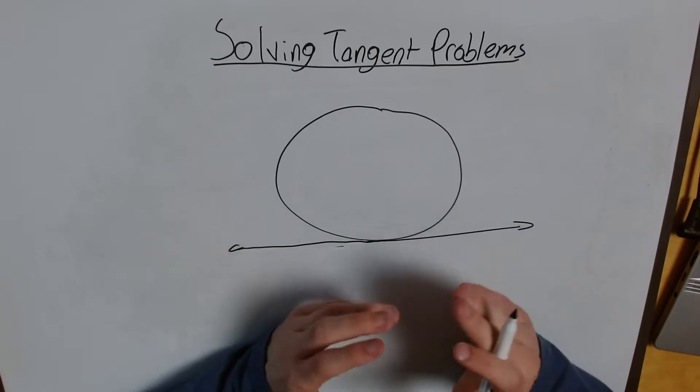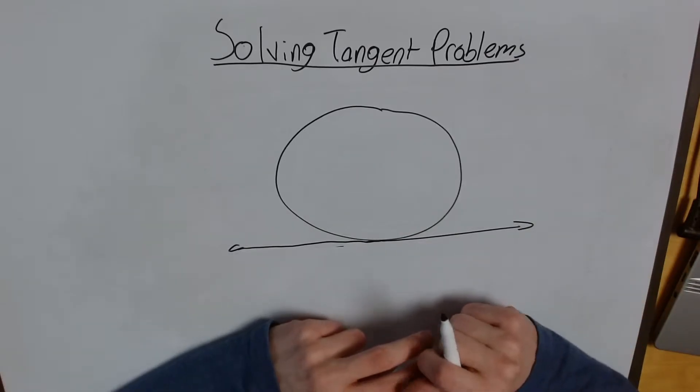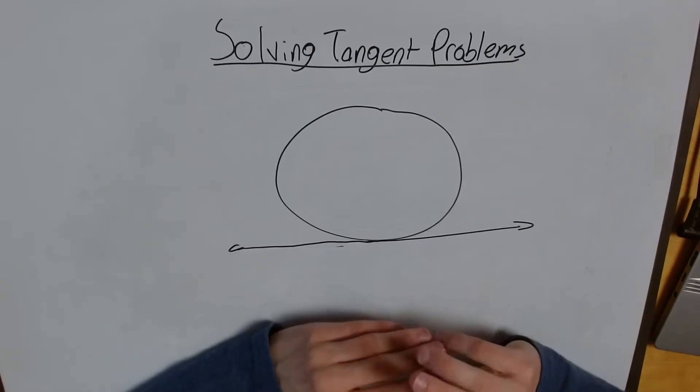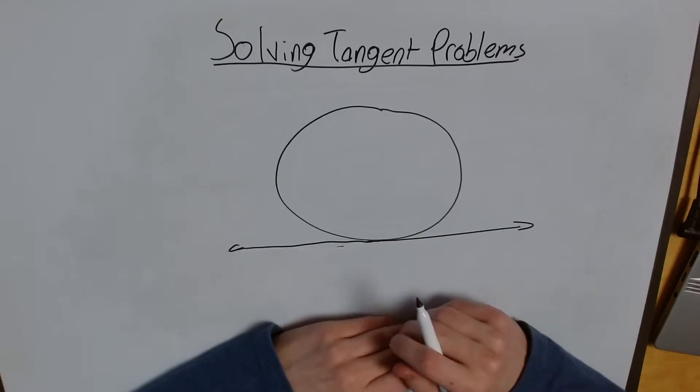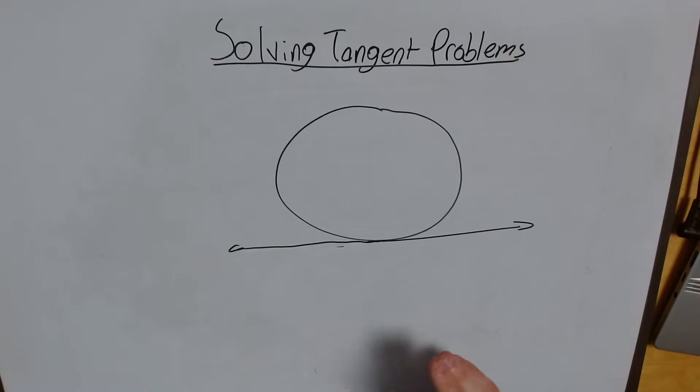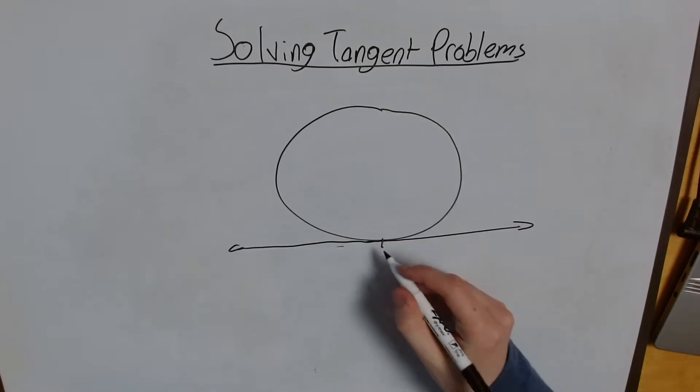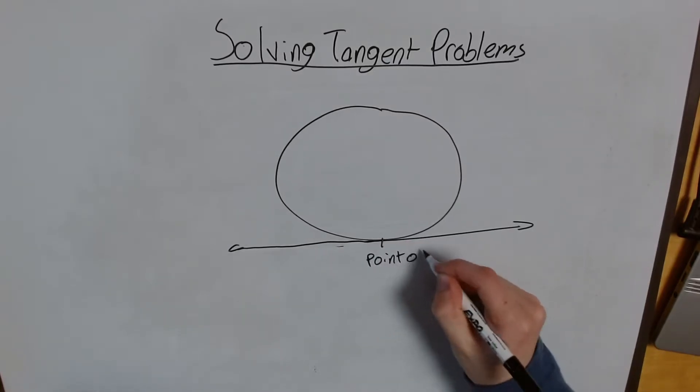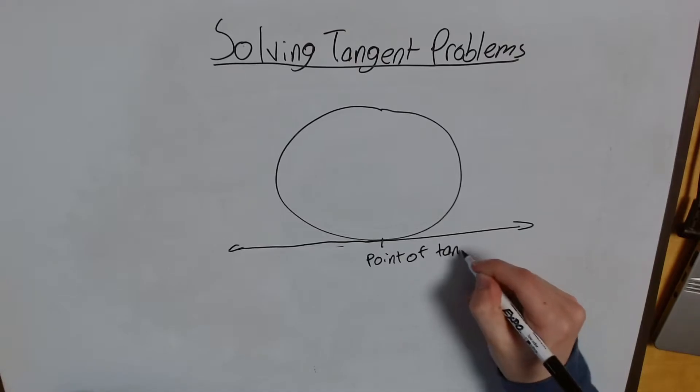And thankfully, there aren't that many rules or tricks you have to memorize about tangents. There are really two key properties of tangents, which we'll get into in this video. But first, what are tangents? Well, tangents, simply put, are lines that touch a circle in one point. We call this point the point of tangency.